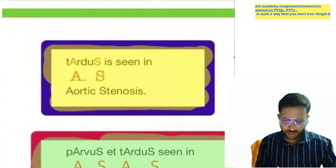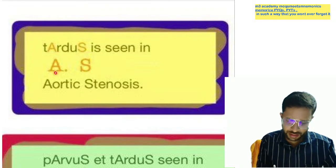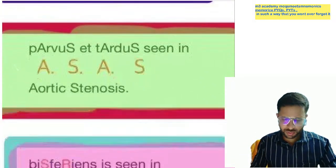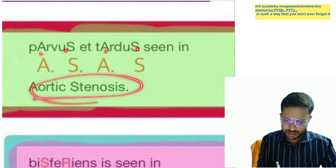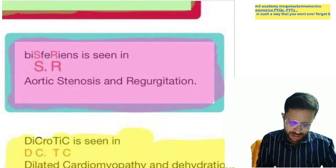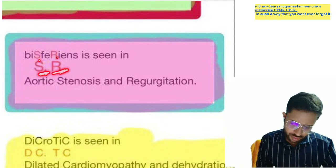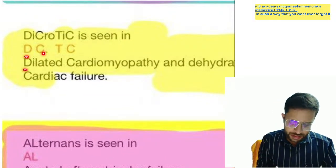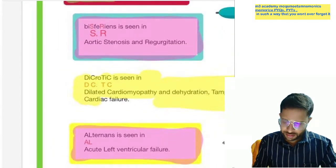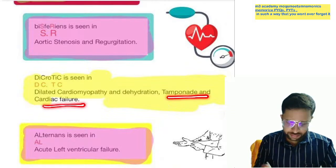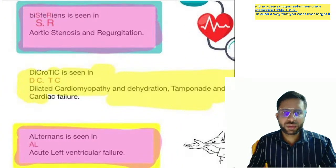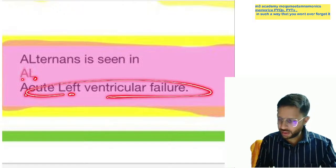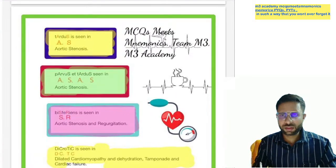Summary of where these pulses are found: Pulsus tardus — A-S means aortic stenosis. Pulsus parvus and tardus together are found in aortic stenosis. Bisferiens — S for stenosis, R for regurgitation — so aortic regurgitation and aortic stenosis. Dicrotic pulse — D for dilated cardiomyopathy, D for dehydration, also cardiac tamponade and cardiac failure. Pulsus alternans — acute left ventricular failure.